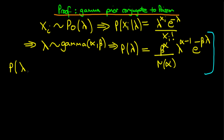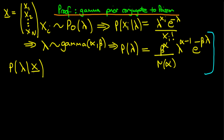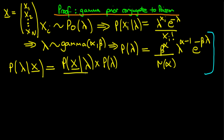Bayes's rule says that the posterior distribution of lambda, given that we've observed a vector of observations x — where x represents the count of crime in city one, city two, all the way through to city n — is equal to the likelihood, the probability of this vector of observations given lambda, times the prior distribution p of lambda, all divided through by the probability of our data. But because this denominator doesn't actually contain lambda at all, we can essentially forget about it.